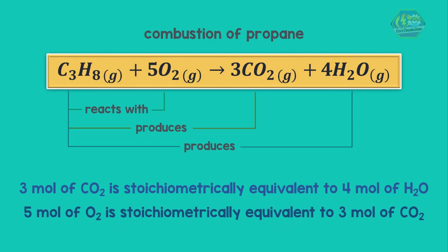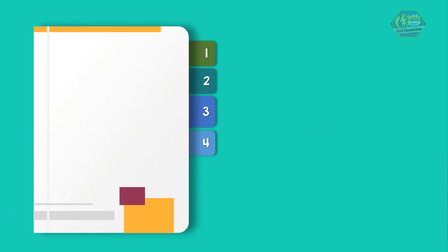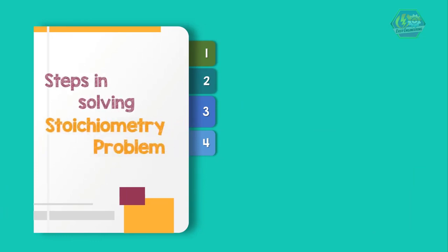In the same way, we can also relate other combinations. As you can see, just because of the balance chemical equation, we can relate each substance to one another. In solving stoichiometry problems, here is an approach.